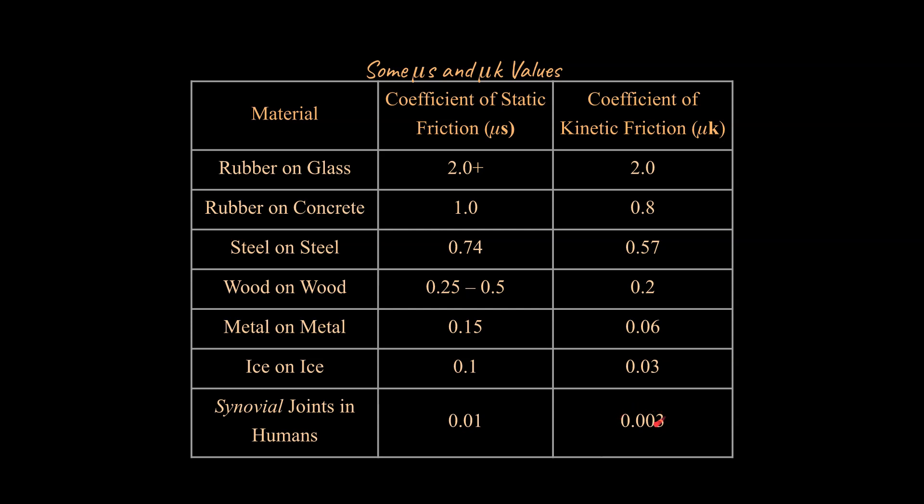This is a biological connection here. Your joints between your bones are fantastic in their ability to reduce friction. They have very, very low μk and μs values for these things. And that actually helps us a lot because it helps reduce friction and wear and tear on our joints.